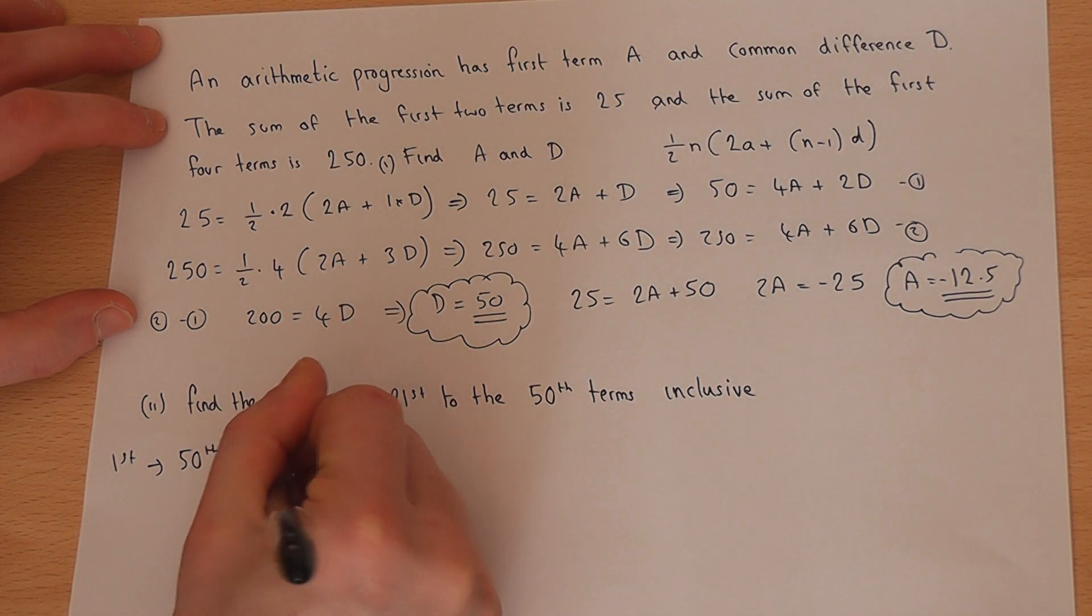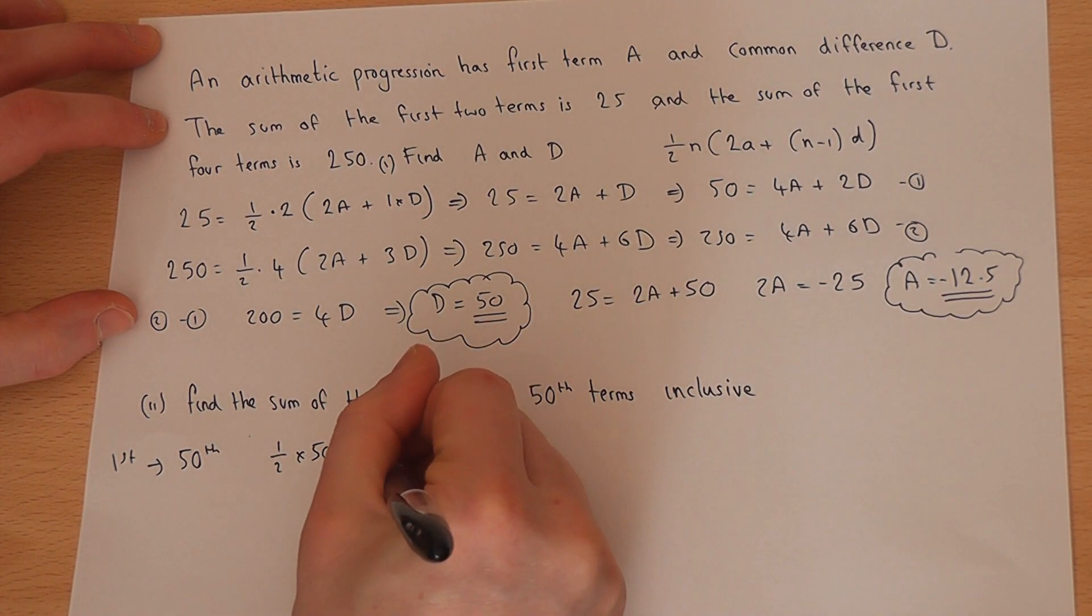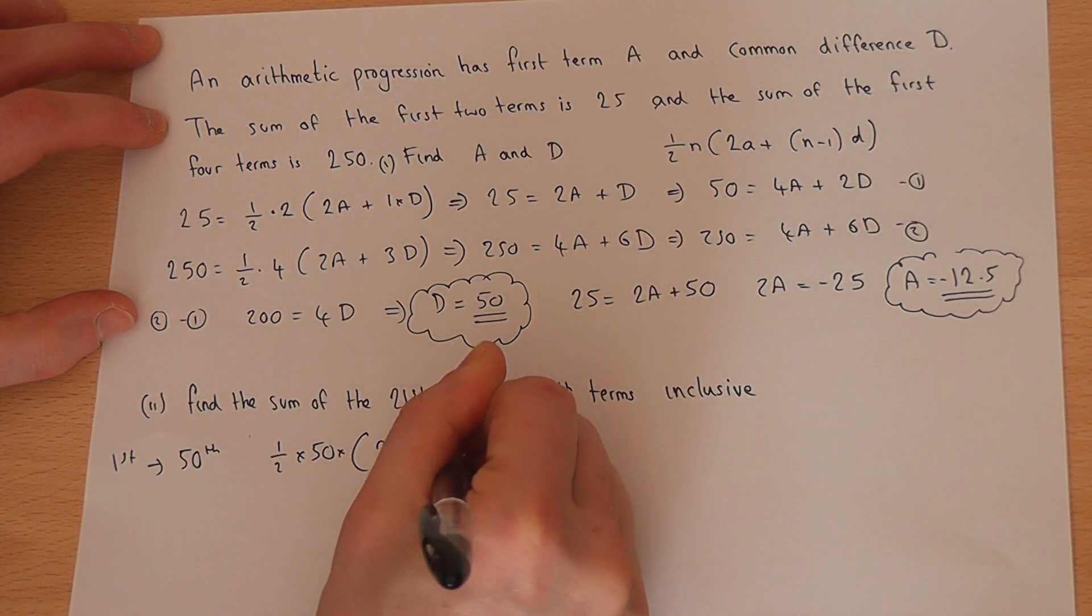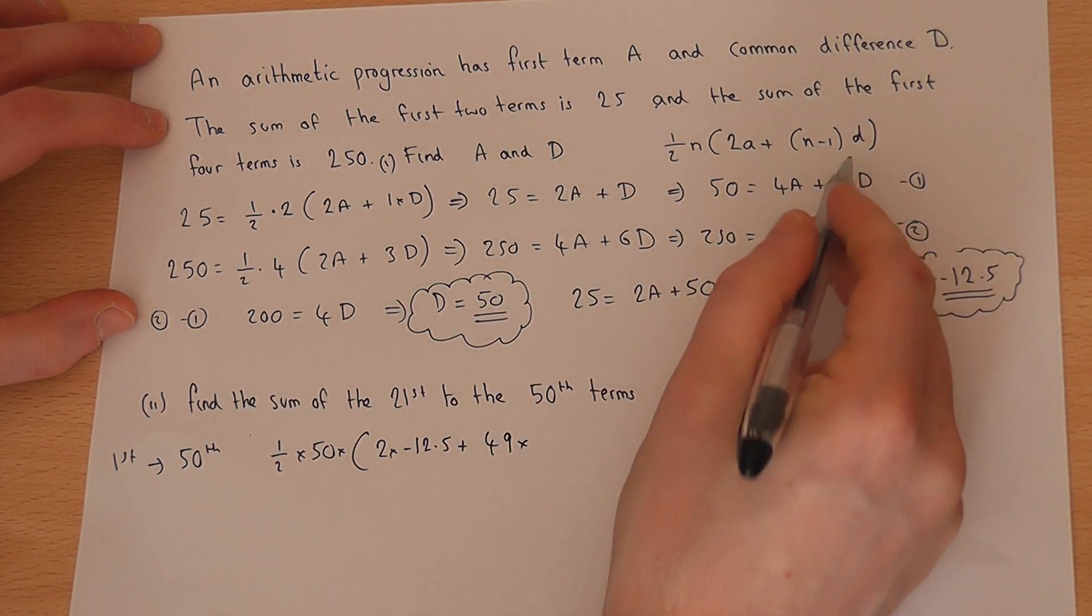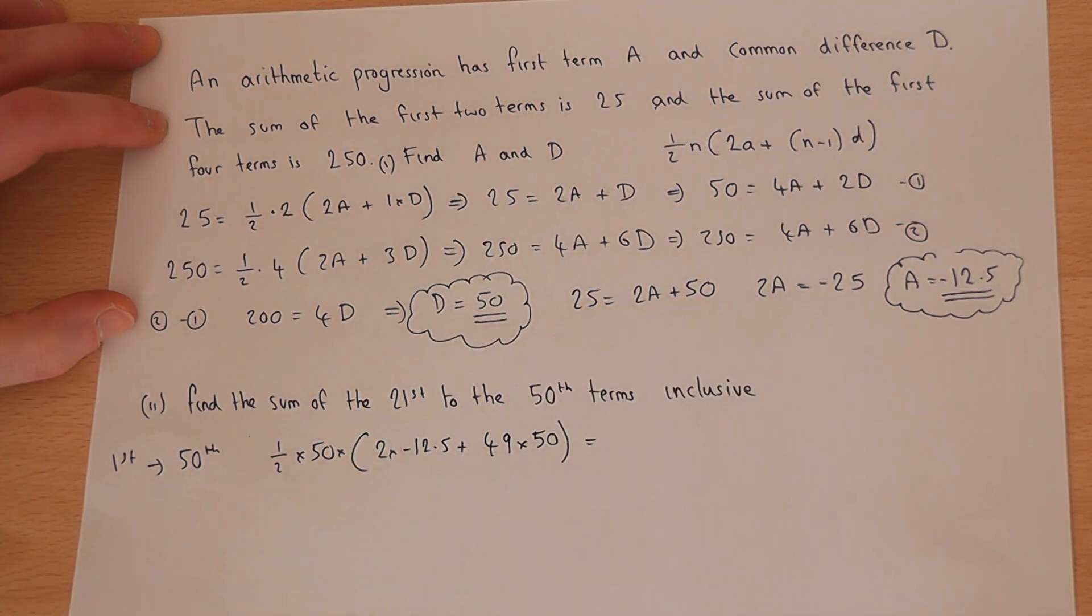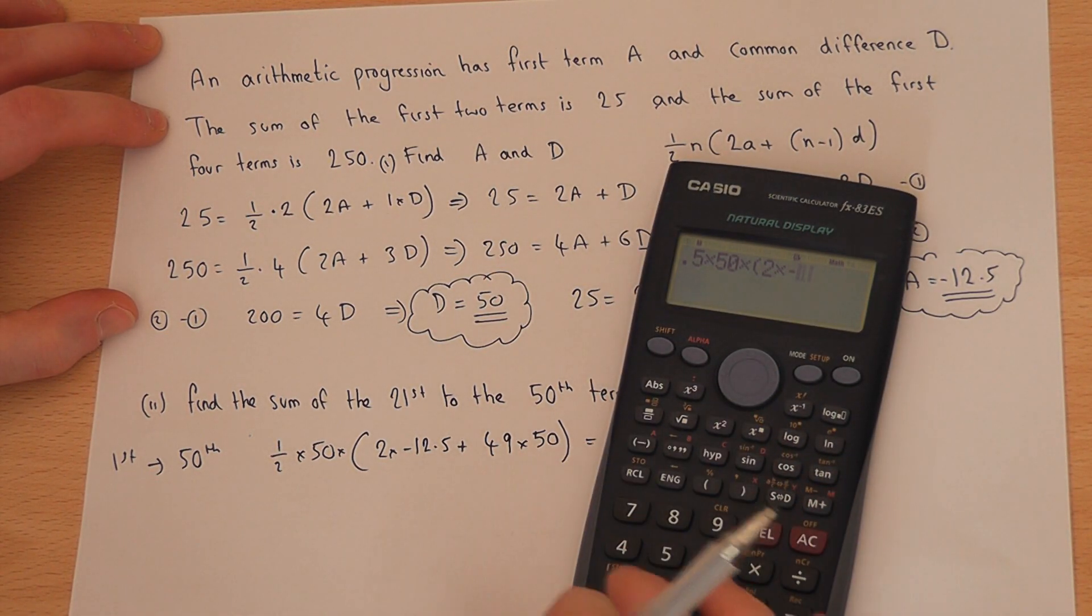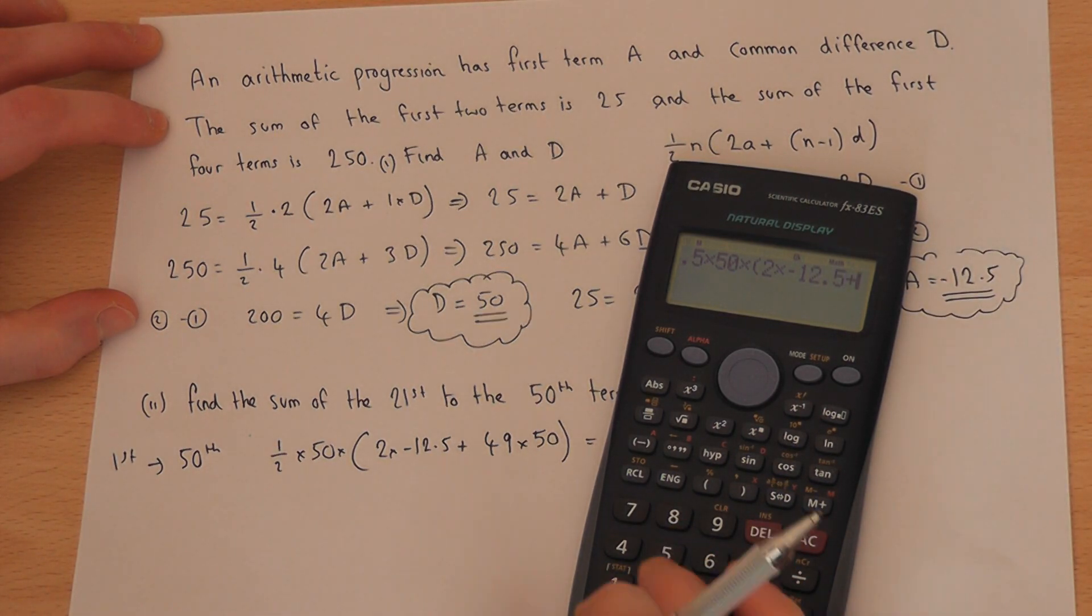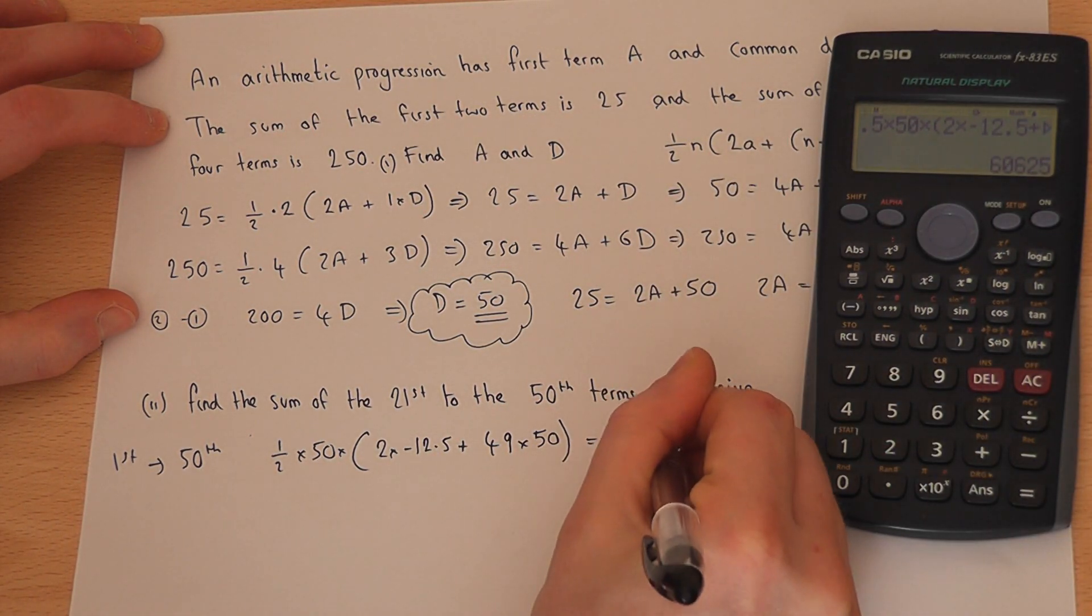So now n is 50. So a half, 50. I now know a and d. So it's two lots of minus 12.5. n is 50, so 50 take 1 is 49 lots of d, which is also 50. So I get my calculator. A half of n times 2 times minus 12.5 plus 49 times 50. Press enter, and I get 60625.